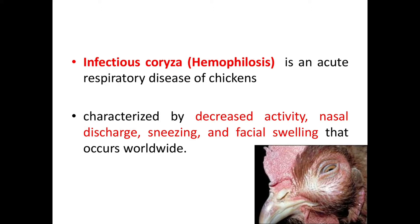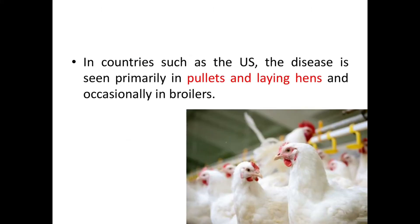You can see a picture of a chicken affected with Infectious Coryza here. In countries such as the US, the disease is seen primarily in pullets and laying hens and occasionally in broilers. It is most prevalent in commercial flocks in California and southeastern states, and all flocks in the northeast have experienced notable outbreaks.